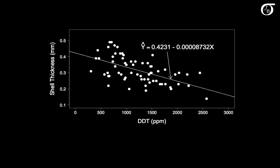Now we can use this regression line for prediction. So suppose for the sake of argument we had another egg from a pelican on that island that had a DDT concentration of 2,000 parts per million, and we wanted to predict its shell thickness. Well, we would simply go up the line and then go over here.